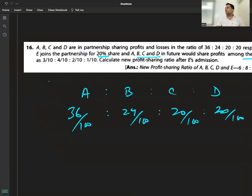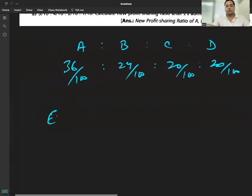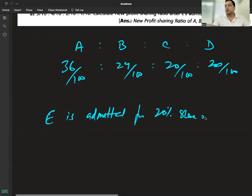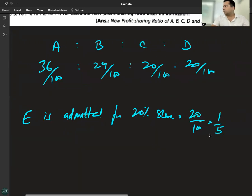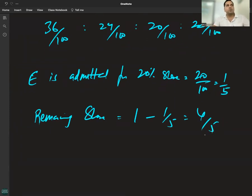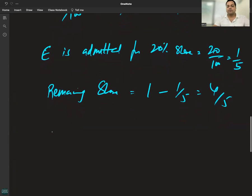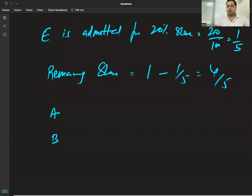E gets one-fifth share. 20% equals 20 by 100, which is 1 by 5. E is admitted for 20 percent share which is equal to one by five.